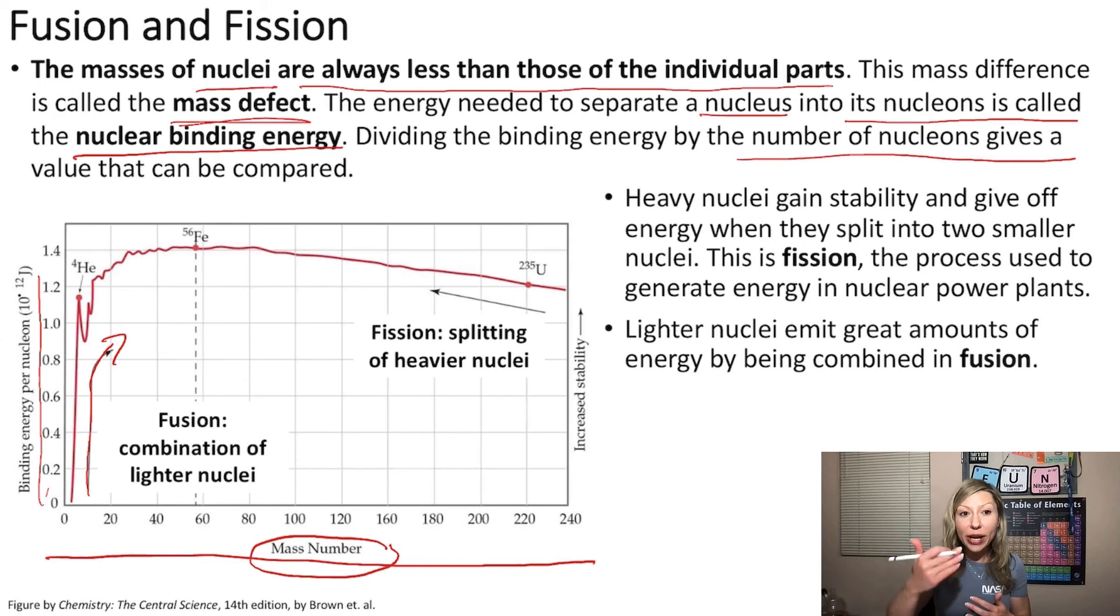And we are going to have these lighter particles that are going to combine in a so-called fusion process, and during this process they are going to emit great amounts of energy. This is actually what is happening in our sun. This is why we get that radiation from the sun towards earth.